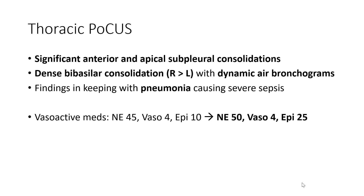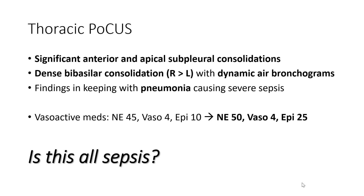The initial assessment was that the patient had significant anterior and apical subpleural consolidations, dense bibasilar consolidations more so on the right than the left, with dynamic air bronchograms. All of these findings were in keeping with pneumonia causing severe sepsis. At the time of the scan, the patient's vasoactive medication needs had increased, including norepinephrine 50 and epinephrine 25. The question then became: is this all sepsis, or is there something else causing hemodynamic decompensation?